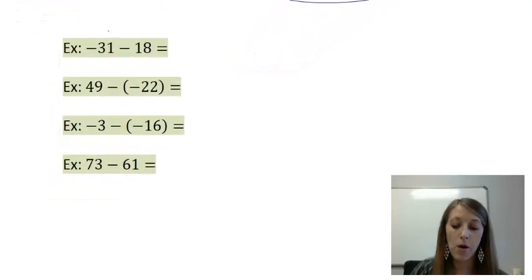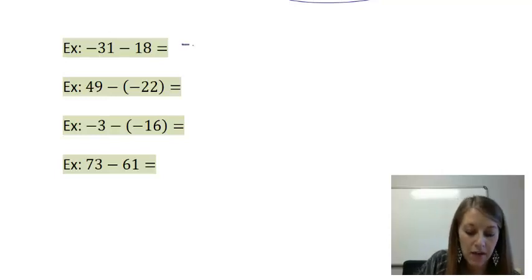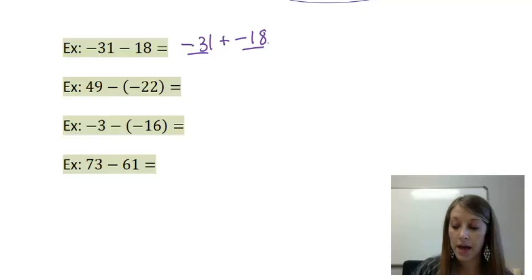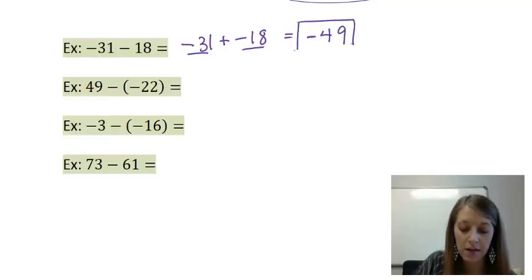Example 1: I'm going to convert it into addition so I can reference my addition rules. I have negative 31 plus a negative 18. It's addition, and the numbers are the same sign, so I just combine them. 31 plus 18 gives me 49. They are both negative, so my final answer is negative 49.